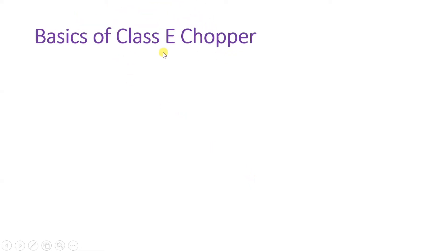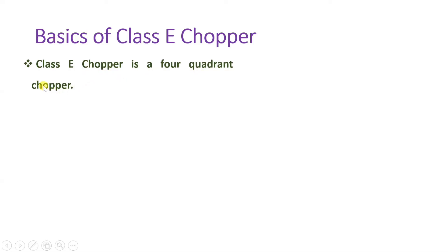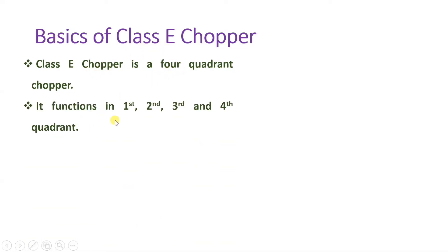Class E chopper is a 4-quadrant chopper, so it functions in all 4 quadrants. As explained in an initial video, choppers are classified based on their output characteristics. Class E chopper functions in all 4 quadrants — first, second, third, and fourth — and I will show you how it functions in all 4 quadrants.